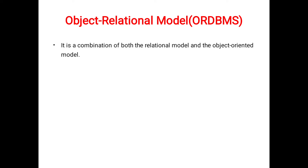The object relational model is a combination of both the relational model and the object oriented model. The relational model and the object oriented model have already been covered in previous sessions. Simply, the relational model shows the structure in the form of tables, while the object oriented model tells us that both the data and the relationships are present in a single structure.